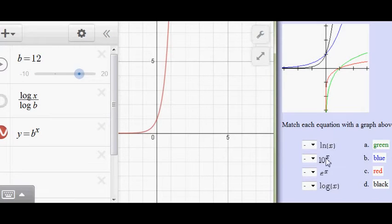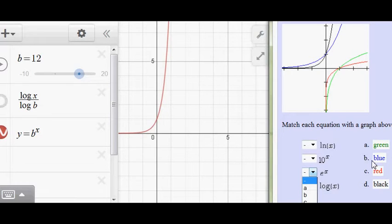So the blue must be the smaller base and the black must be the bigger base. So the blue matches the e to the x, which is the smaller base 2.718, that would be choice b. And 10 to the x has the bigger base so it grows faster, which is the black graph, which happens to be choice d.